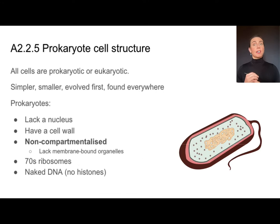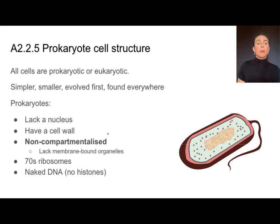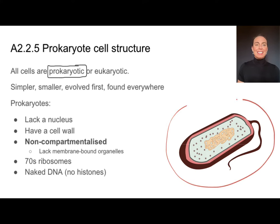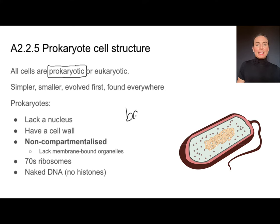Organisms can be classified in lots of different ways, but all cells fall into two basic categories: they are either prokaryotic cells or eukaryotic cells. This picture is a prokaryotic cell. I often think about prokaryotes as bacteria.